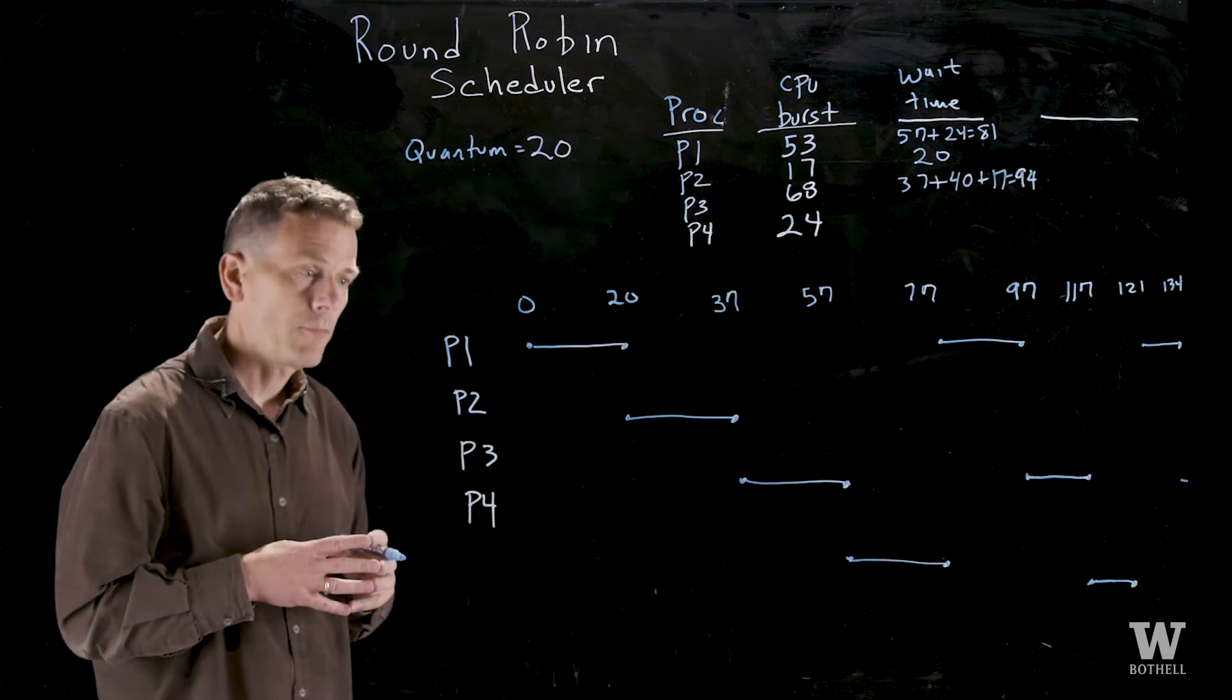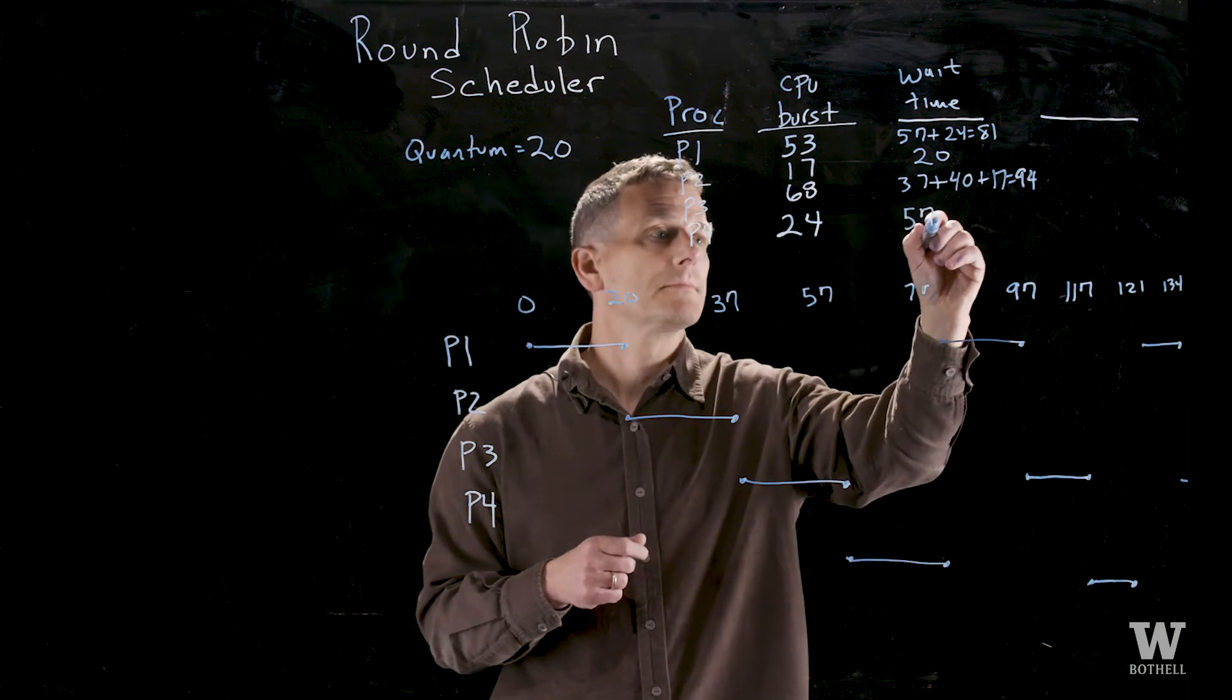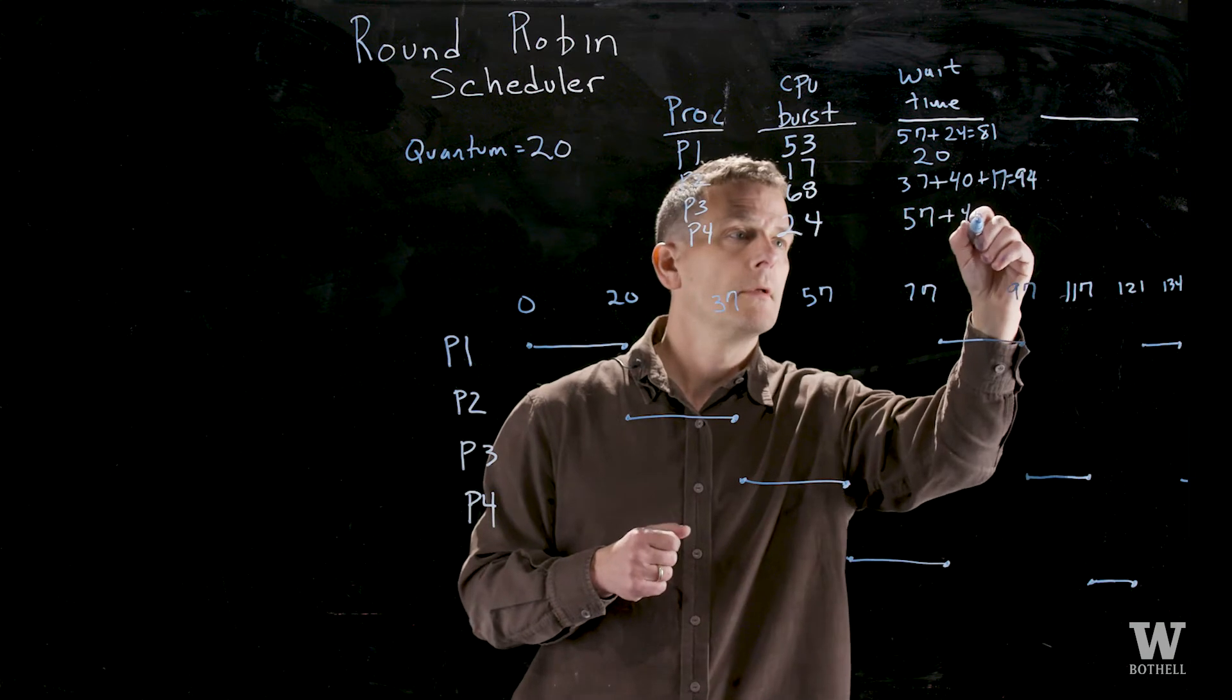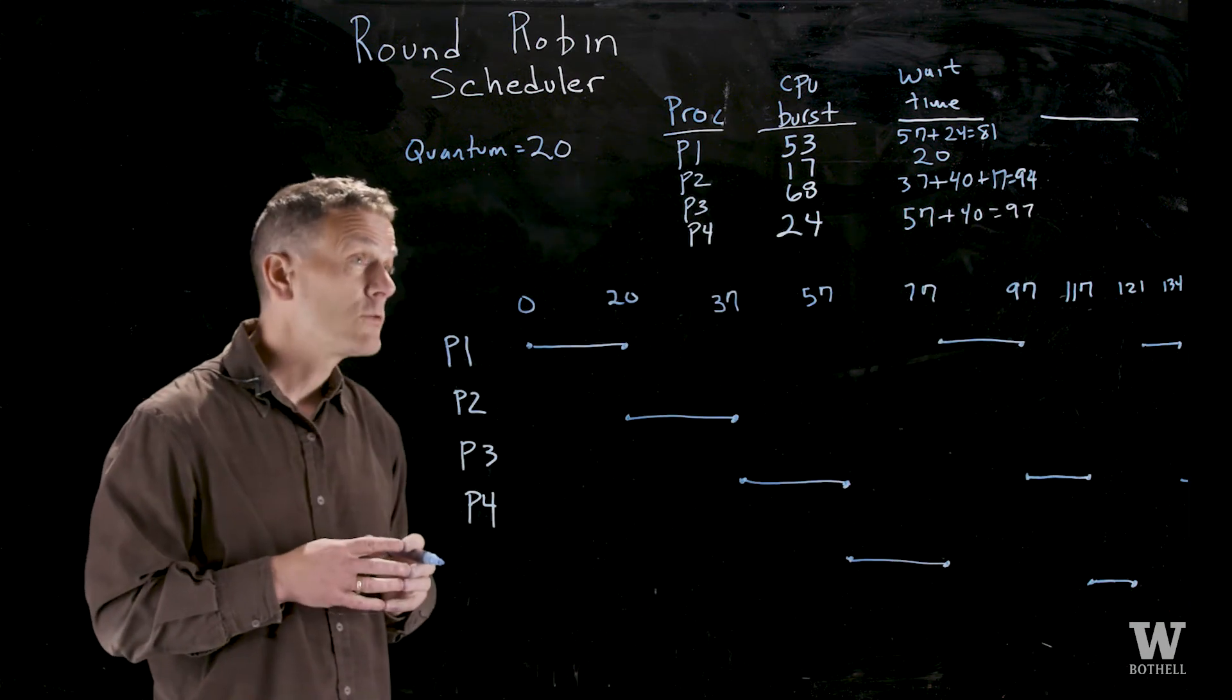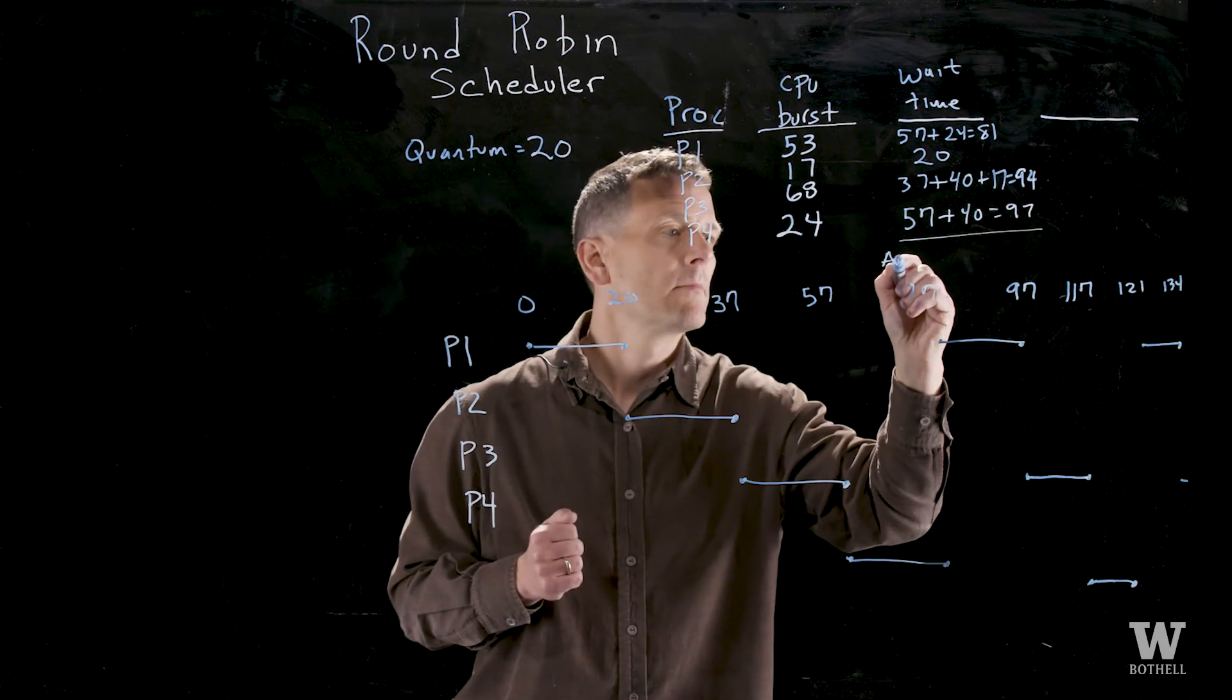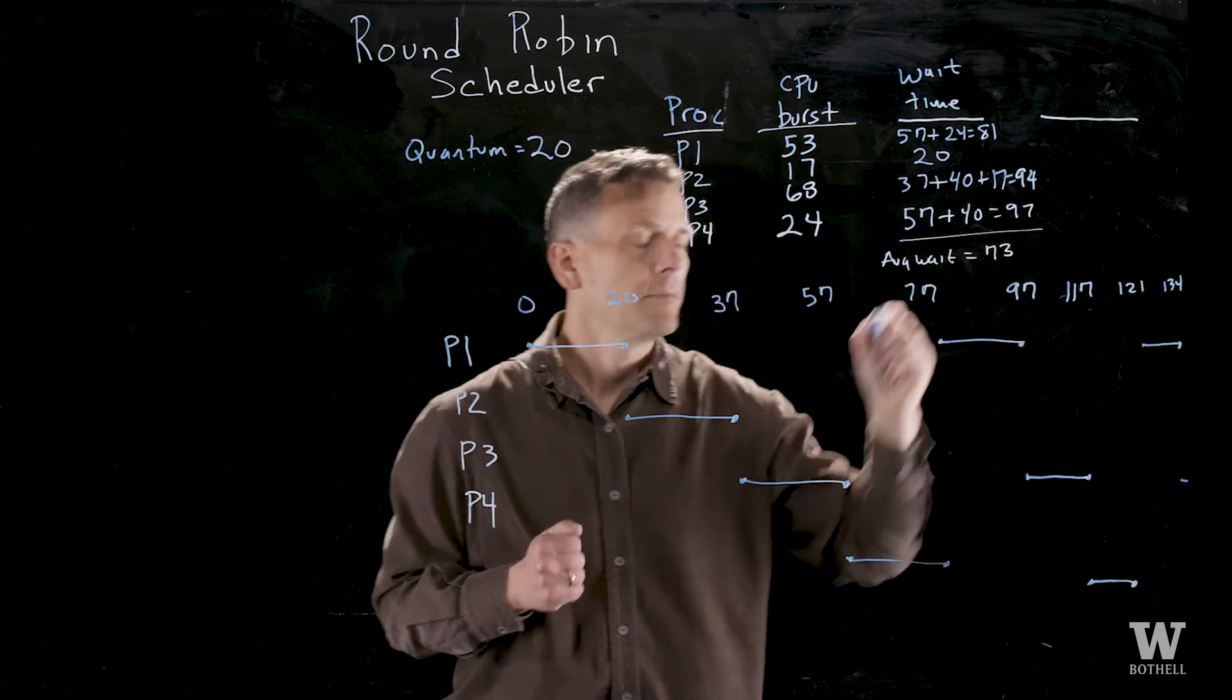Finally process 4. Process 4 waited 57 units before it got scheduled and then another 40, so 97 units. If we add those wait times together and divide by 4 we see the average wait time is 73 milliseconds.